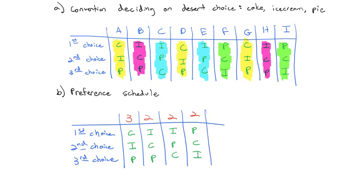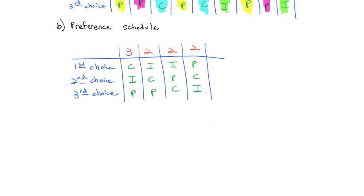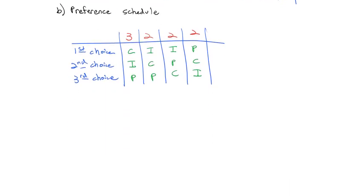A preference schedule shows us how many times each result came up in the election and is actually much easier to read when we're trying to figure out who our actual winner is. If we add across the top, 3 plus 2 plus 2 plus 2, we see 9 votes total.